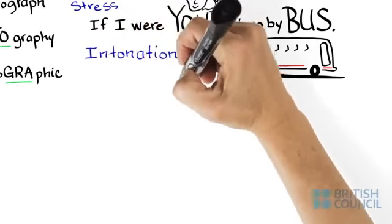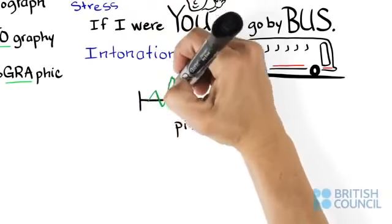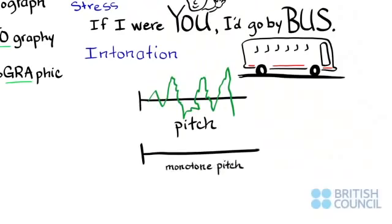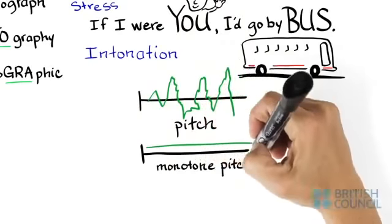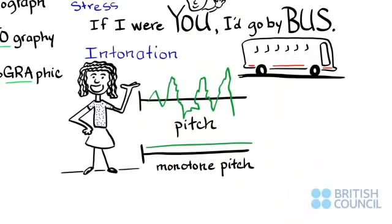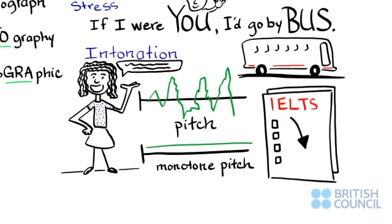Intonation. The pitch of your voice changing as you talk. Monotone intonation is typical of someone who has memorized long responses. This may result in lower test scores.